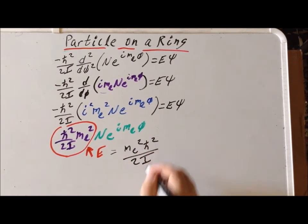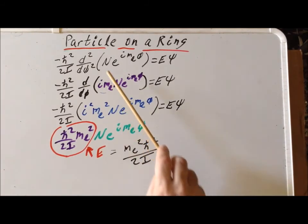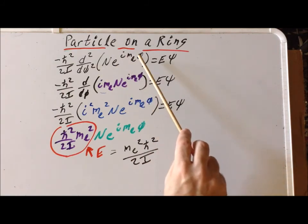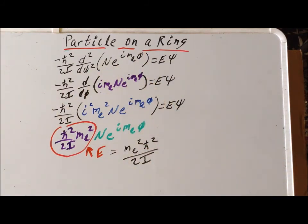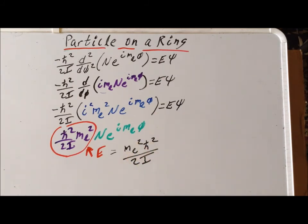So we've shown two things. First, we've shown that a wave function of the form N e to the i m_l phi actually is an eigenfunction of the Hamiltonian for this particular system. And secondly, we've shown that the energy associated with that particular eigenfunction is going to be m_l squared h-bar squared over 2I. We have not yet shown any conditions on m_l. In our next video, we're going to show what the more specific conditions on m_l are. Thank you very much for your attention. Have a good one.